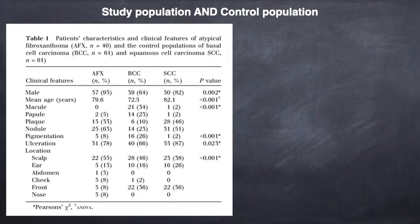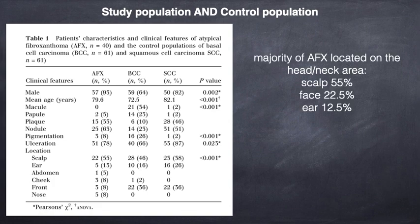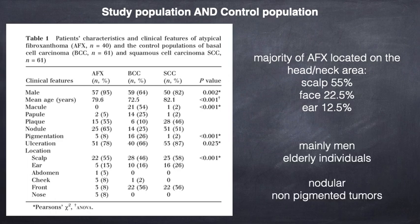This is the study population with 40 AFX tumors and the control population of BCC and SCC. As you can see, the majority of lesions were located on the head and neck area, with the great majority on the scalp, mainly in elderly individuals, mainly men, presenting as nodular and non-pigmented tumors.